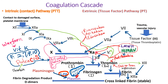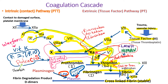Let's review the coagulation cascade. When vascular injury occurs, tissue factor is released to activate factor 7. Factor 7a activates factor 10. Factor 10a, with the help of factor 5, converts prothrombin to thrombin, and thrombin converts fibrinogen to fibrin. Factor 13 cross-links fibrin to strengthen the clot. Thrombin from the extrinsic pathway activates the intrinsic pathway via factor 11, factor 9, and with factor 8, factor 10 is activated again. Thrombin also activates factors 13, 8, and 5.